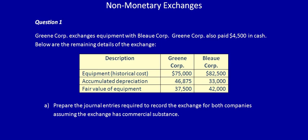Part A: prepare the journal entries required to record the exchange for both companies assuming the exchange has commercial substance. Let's start with Green Corporation.